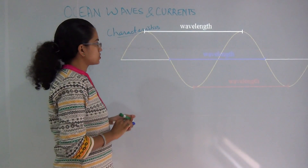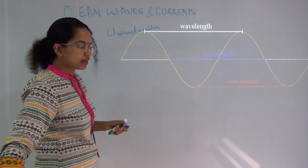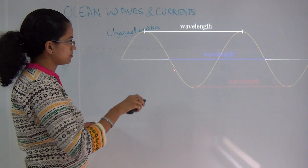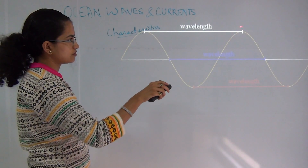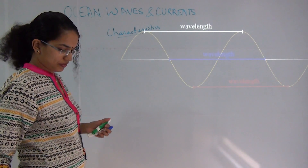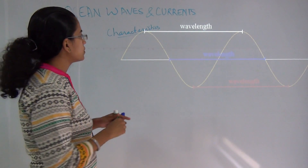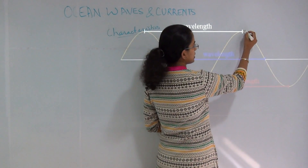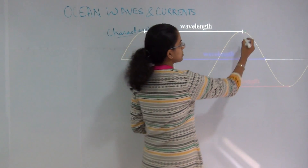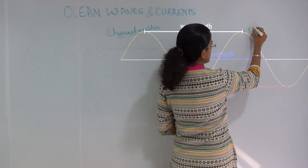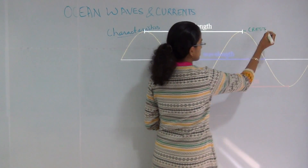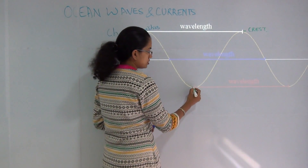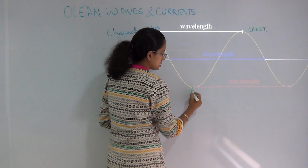This is a general wave that you can see in yellow. You will have this pattern which is known as a wave. The portion that goes above the line at the highest point is known as the crest.